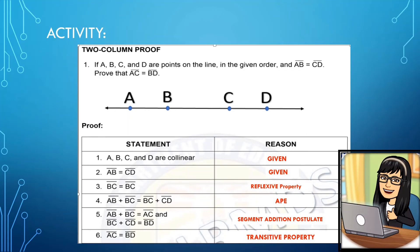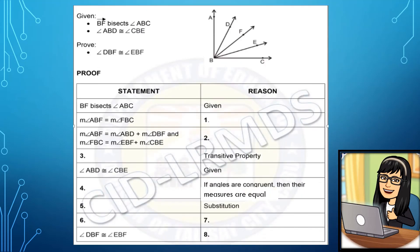Now that you know the important ideas about this topic, let us go deeper by moving on to the next activity. Given: BF bisects angle ABC, angle ABD is congruent to angle CBE. We have to prove that angle DBF is congruent to angle EBF. We have two columns — the first for statements and the second for reasons. We will supply the missing statements. The first given statement: BF bisects angle ABC — reason: given.